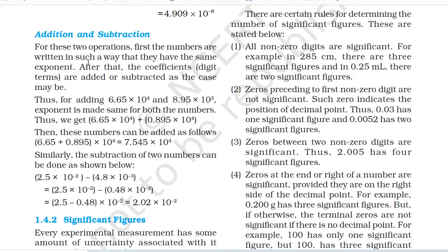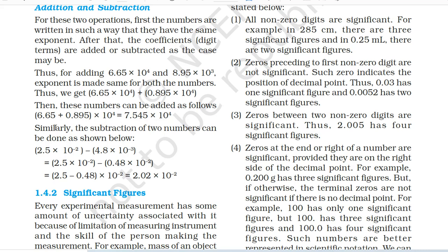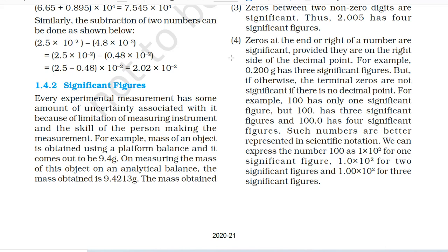Addition and subtraction: For these two operations, first the numbers are written in such a way that they have the same exponent. After that the coefficients are added or subtracted as the case may be. Thus for adding 6.65 × 10⁴ and 8.95 × 10³, the exponent is made the same: 6.65 × 10⁴ + 0.895 × 10⁴ = 7.545 × 10⁴. Similarly, subtraction: 2.5 × 10⁻² − 4.8 × 10⁻³ = 2.5 × 10⁻² − 0.48 × 10⁻² = (2.5 − 0.48) × 10⁻² = 2.02 × 10⁻².